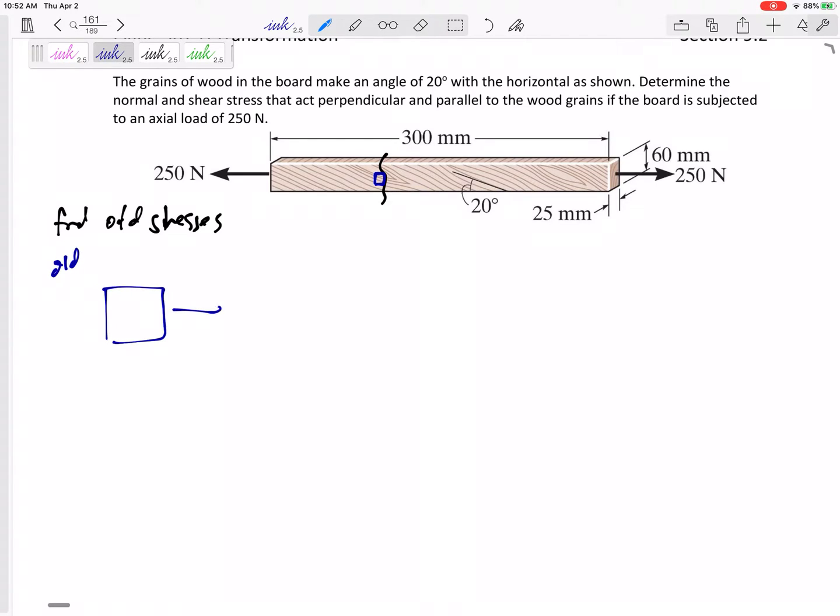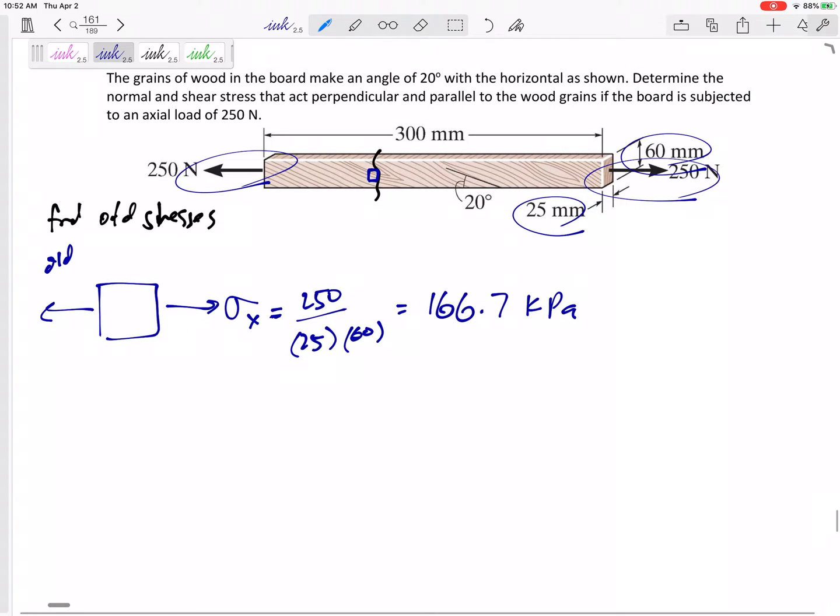If we cut it right here and looked at this blue - let me draw it blue - so this is the old, then we would have a force of 250. But what type of stress would this be? Well, it's a uniform normal stress of 250 over the area 25 by 60. This would be 0.166 MPa or 166.7 kPa.